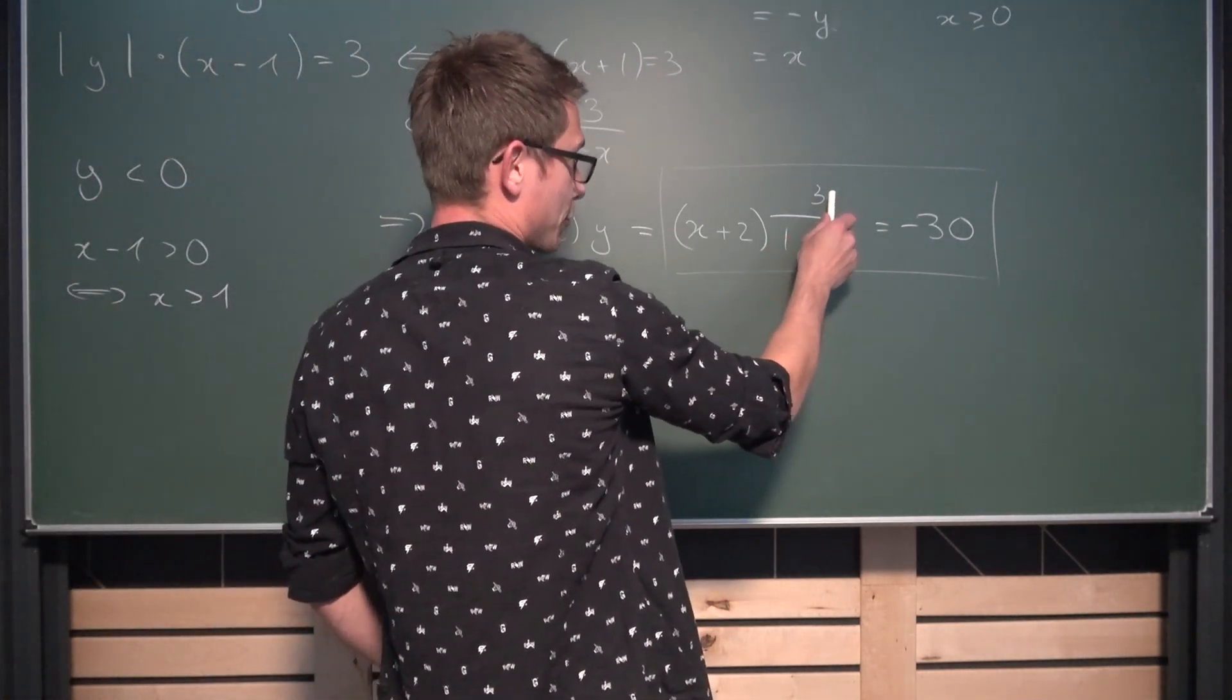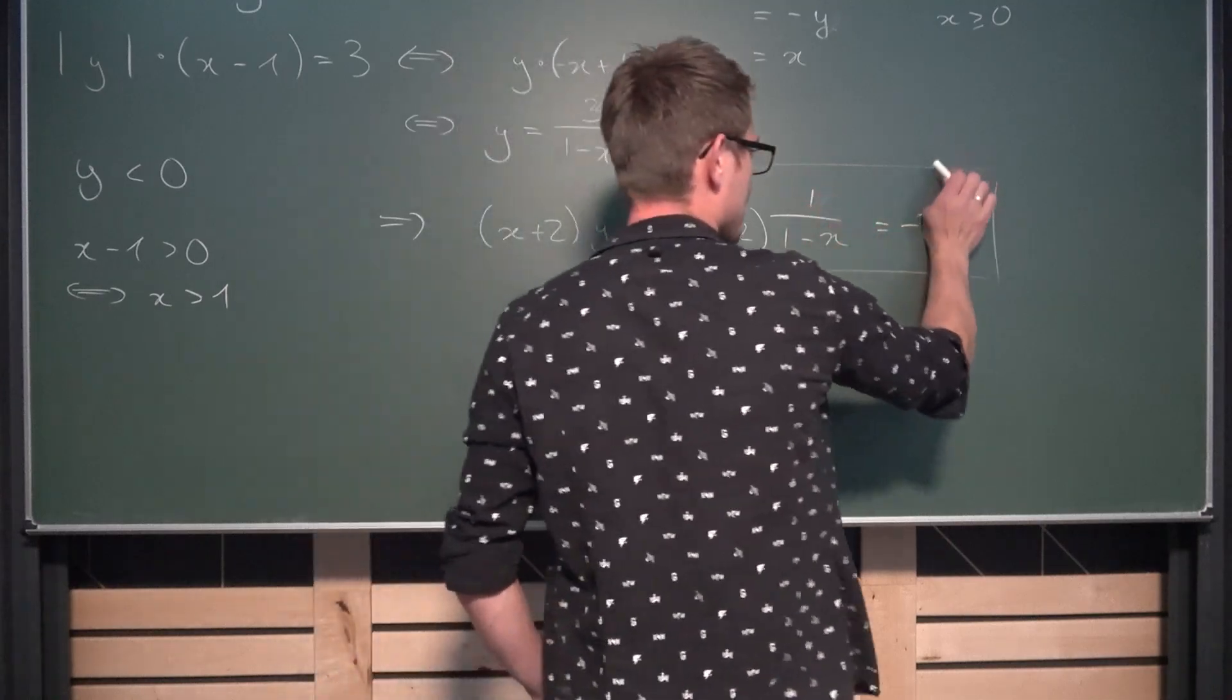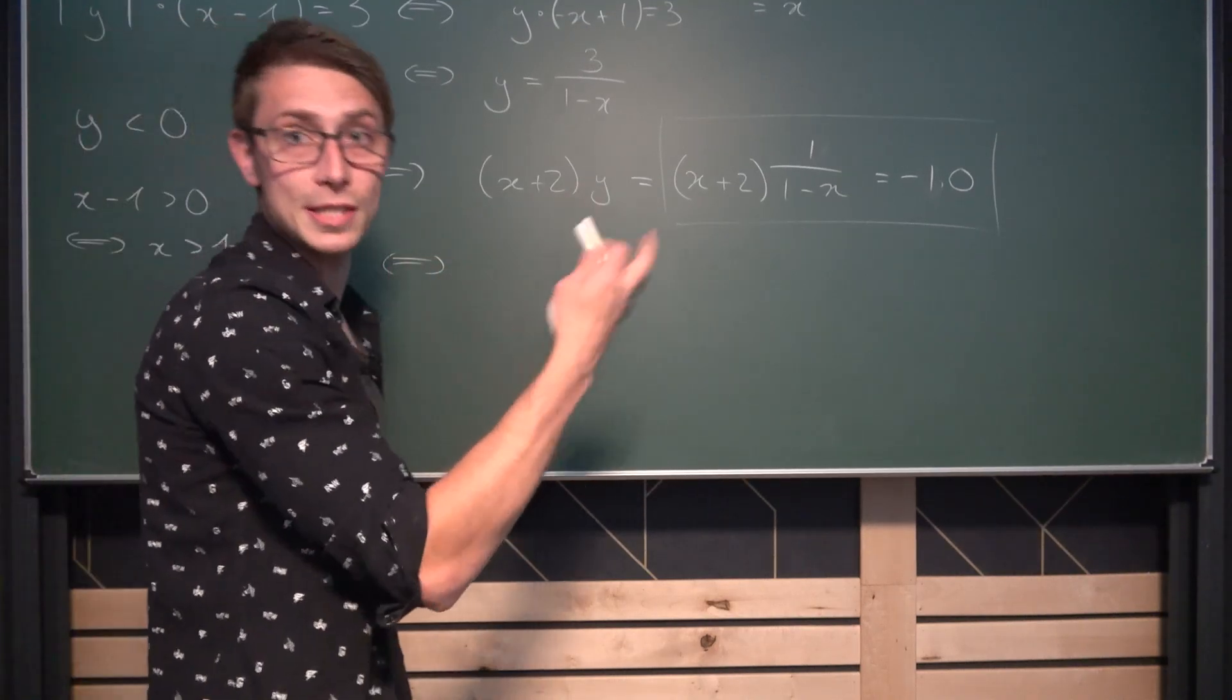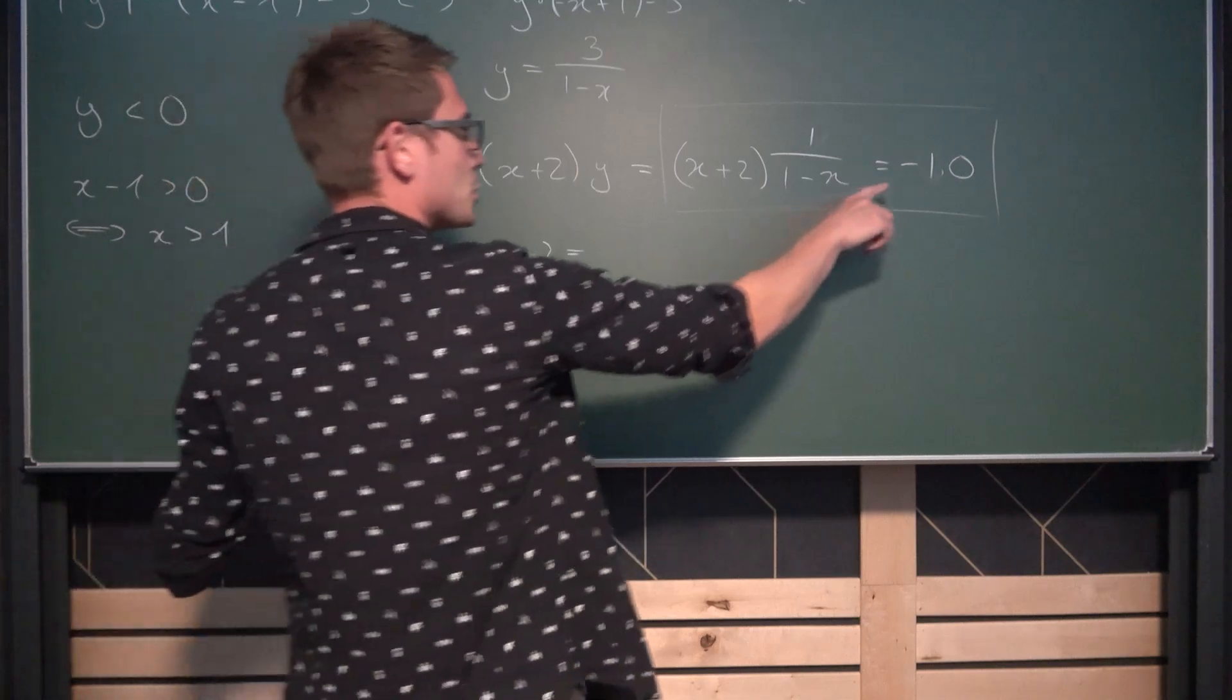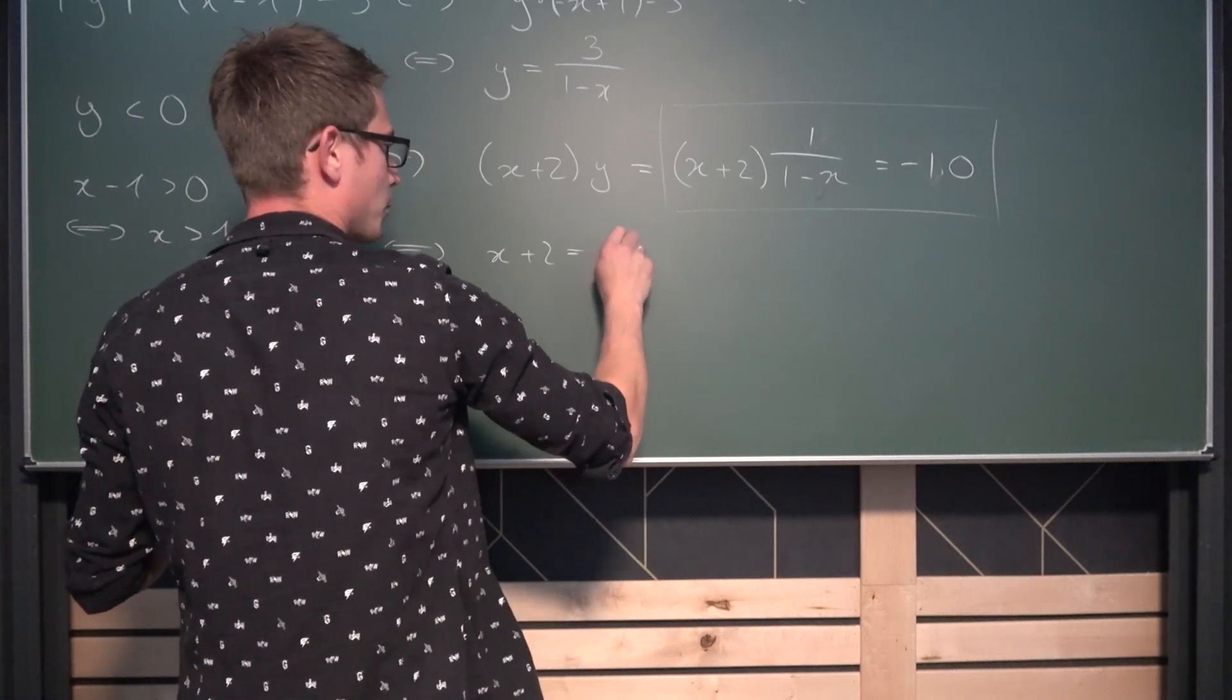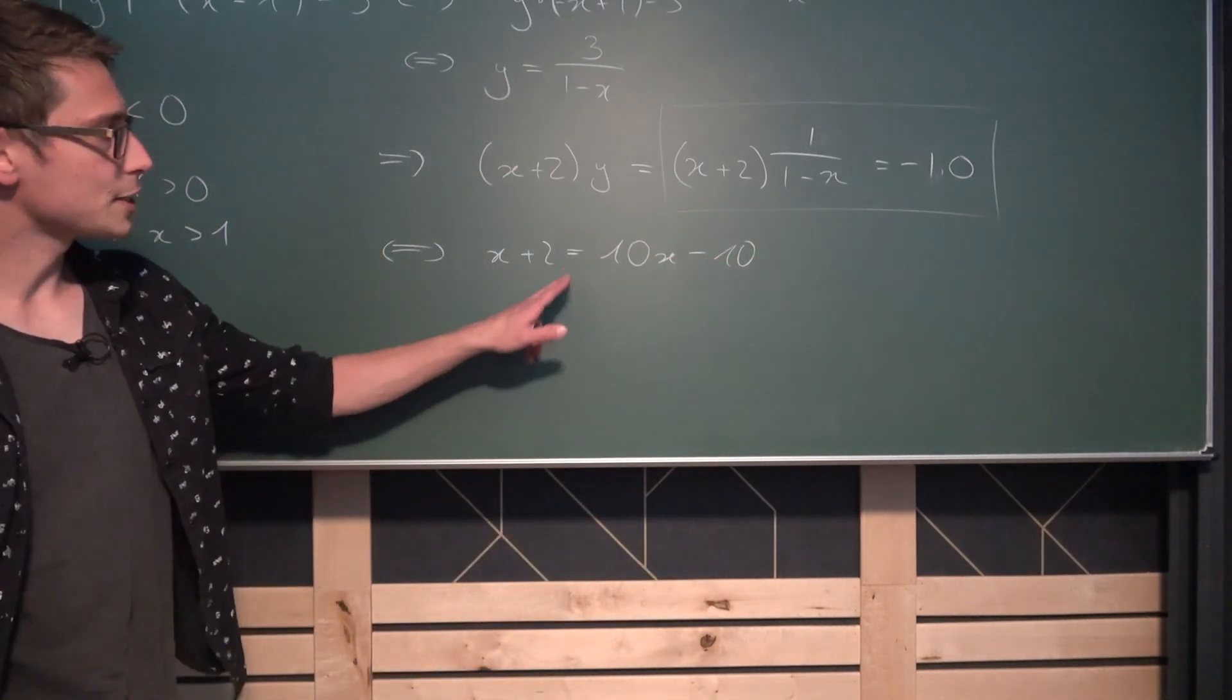Now we can divide both sides by 3. For example, this gives us just negative 10 on this side and then we can multiply both sides by 1 minus x. It's not equal to 0. Please remember. Then we are going to get x plus 2 is equal to the negative sign turns the relation around the signs. Meaning we are going to end up with 10x minus 10.